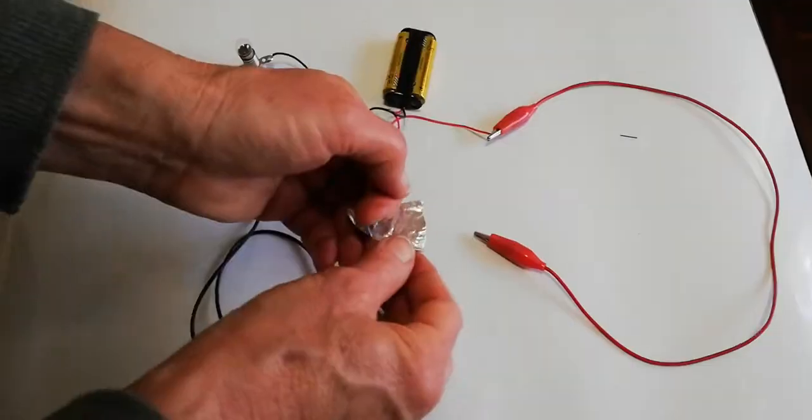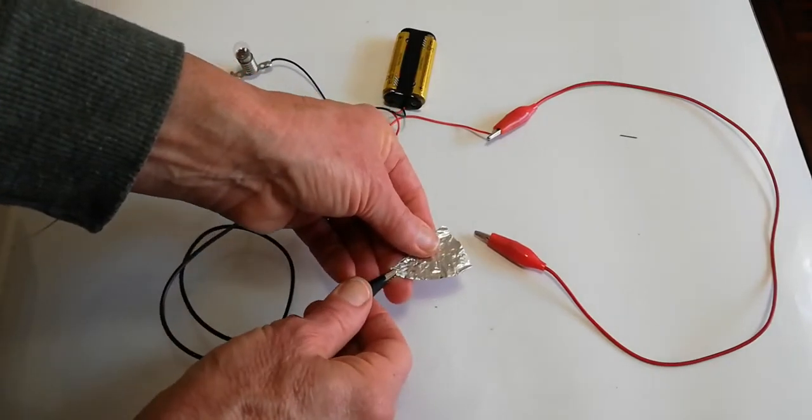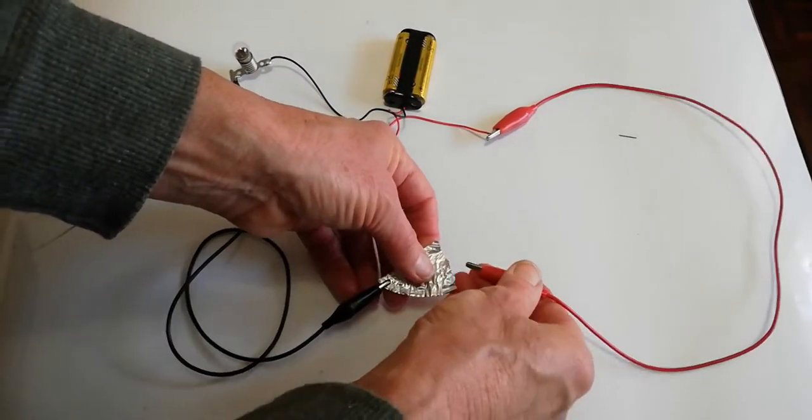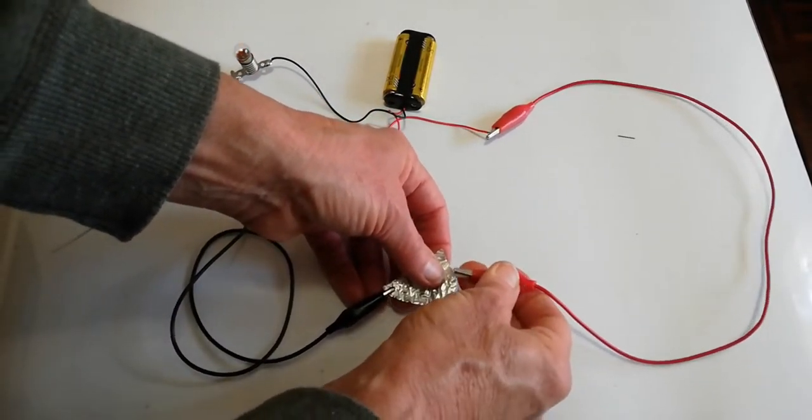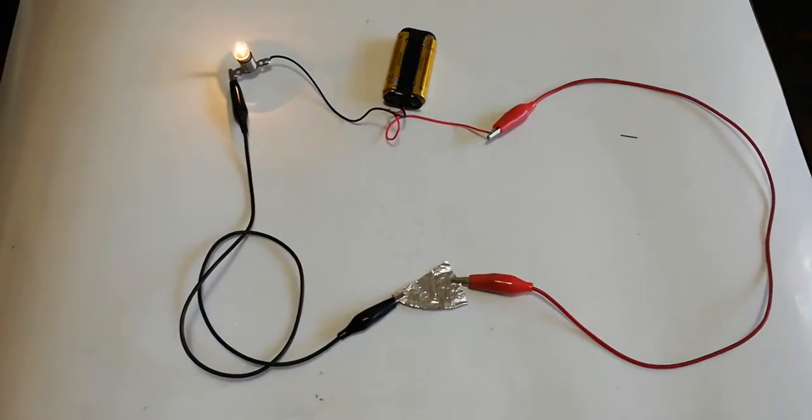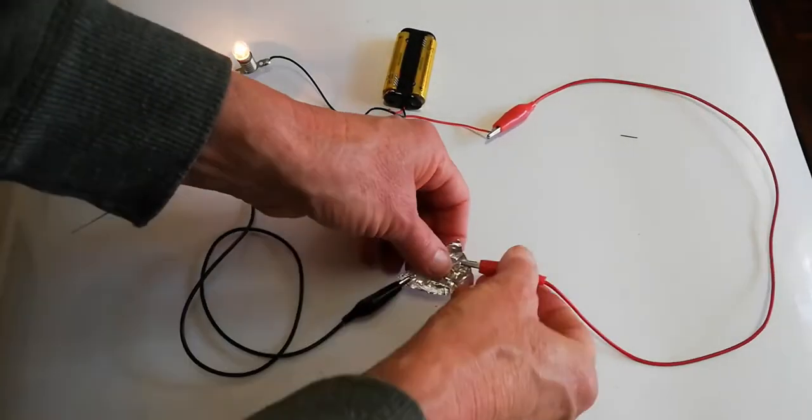Now we've got a piece of aluminium foil. This is a nice stiff one that I took from the coffee container. There we go. You can see how that is working.